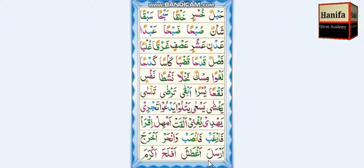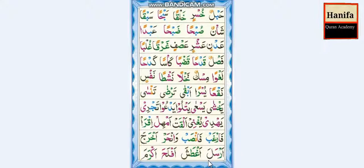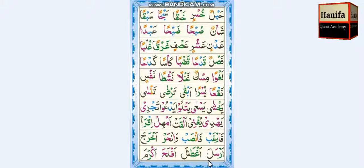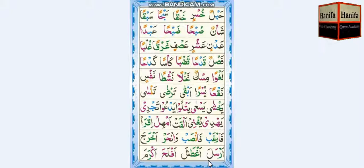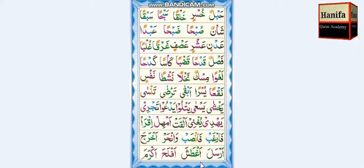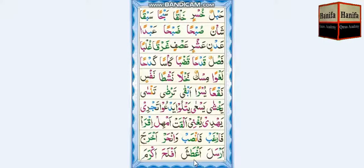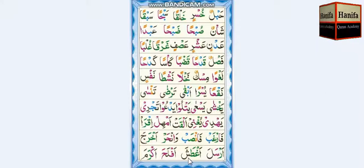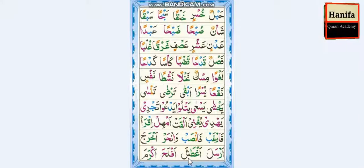Hamza, Ra, Fatha — ar. Sin, Fatha — sa. Ar-sa. Lam, Fatha — la. Ar-sa-la. Hamza, Ghayn, Fatha — aq. Ta, Fatha — ta. Aq-ta. She, Fatha — sha. Aq-ta-sha.